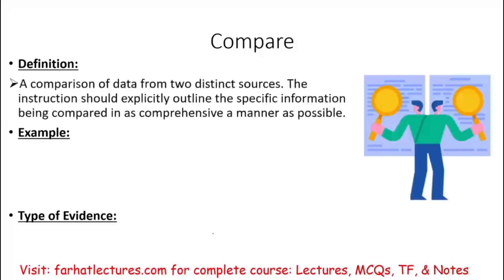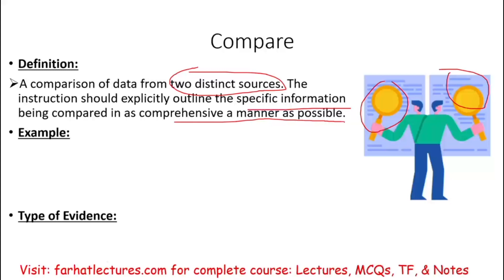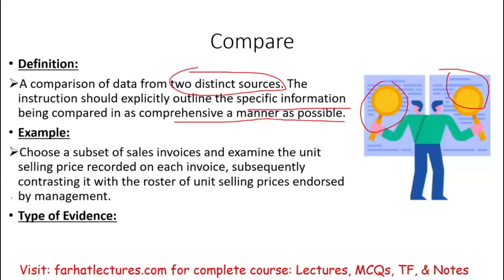Compare means a comparison of data from two different sources. The instructions should explicitly outline the specific information being compared in as comprehensive a manner as possible. An example would be to compare a subset of sales invoices and examine the unit selling price recorded on each invoice, then contrast it with the roster of unit selling prices endorsed by management to see if they match. The type of evidence is inspection.